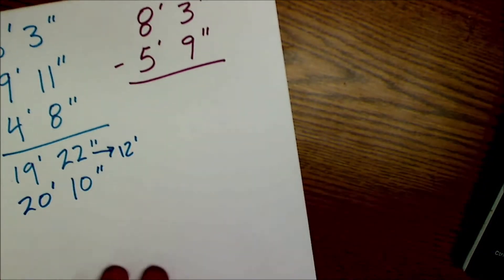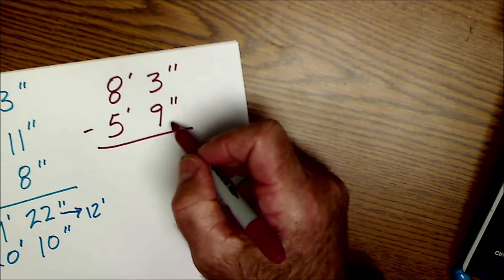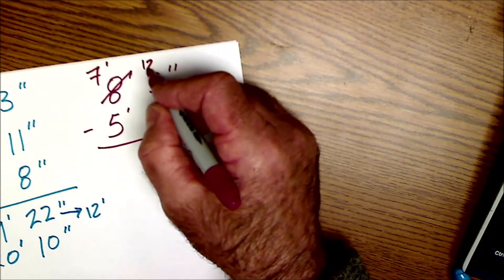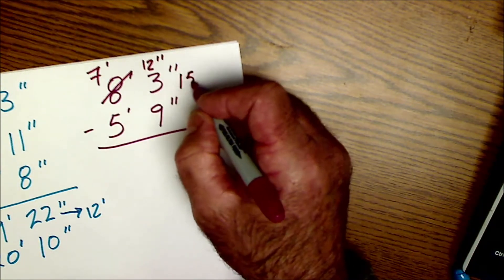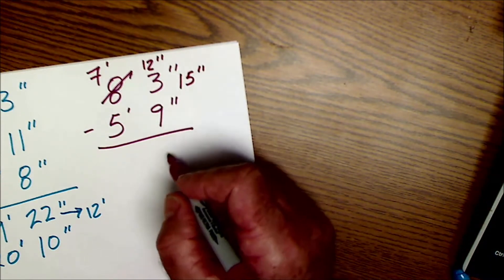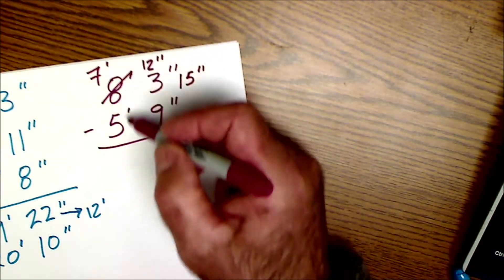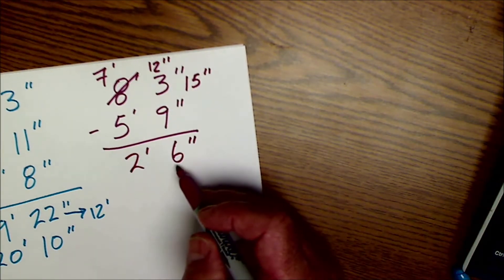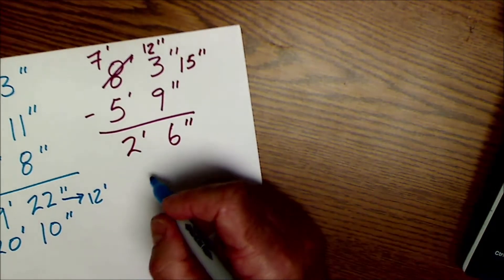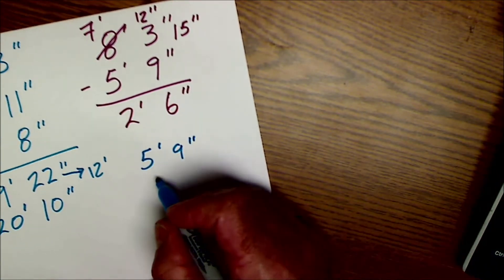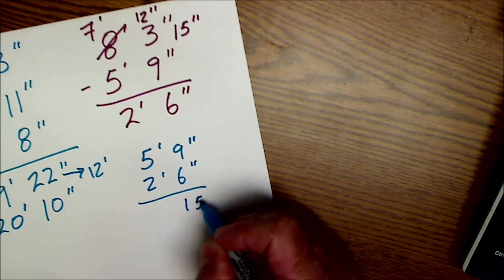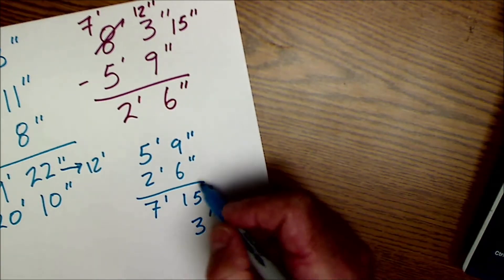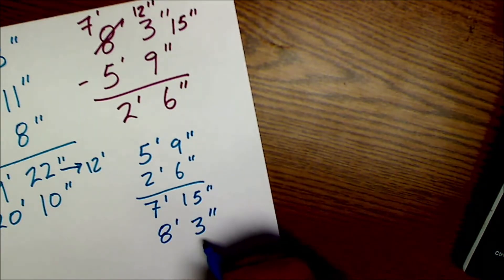In subtracting it works the exact same way except maybe you're going to have to borrow. So 3 inches minus 9 inches I can't do that so I'm going to borrow one foot from here and make this 7 feet and I'm going to take that foot and add those 12 inches here. So those 12 inches and those 3 inches are going to give me 15 inches. 15 inches minus the 9 inches will give me 6 inches and then 7 feet minus the 5 feet is 2 feet. So 8 foot 3 inches minus 5 foot 9 inches is equal to 2 foot 6 inches.